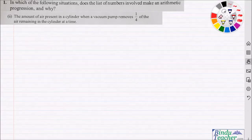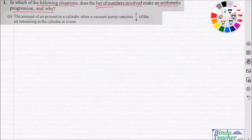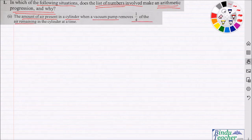Hello friends, this is Bindu Kumar here. Let's look at this question: in which of the following situations does the list of numbers make an arithmetic progression, and why? We should look at the different situations and identify the list of numbers. The situation given here is the amount of air present in a cylinder when a vacuum pump removes one-fourth of the air remaining in the cylinder at a time.